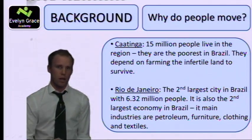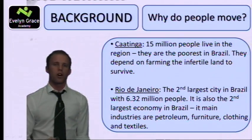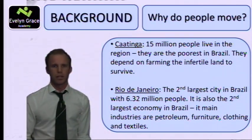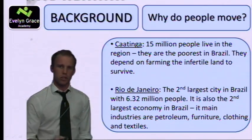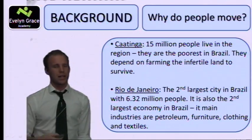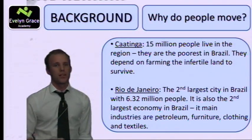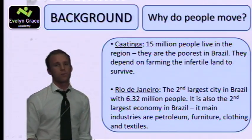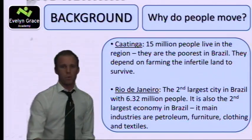They're attracted to Rio for the following reasons. There is a big economy in Rio — it's the second largest city in Brazil and has the second largest economy within Brazil. It has big industries in petroleum, furniture, clothing, and textiles. All of these industries provide quite a few jobs that people from Caatinga could do, so unskilled labour. This is why they're attracted to the city and wanting to find work there.